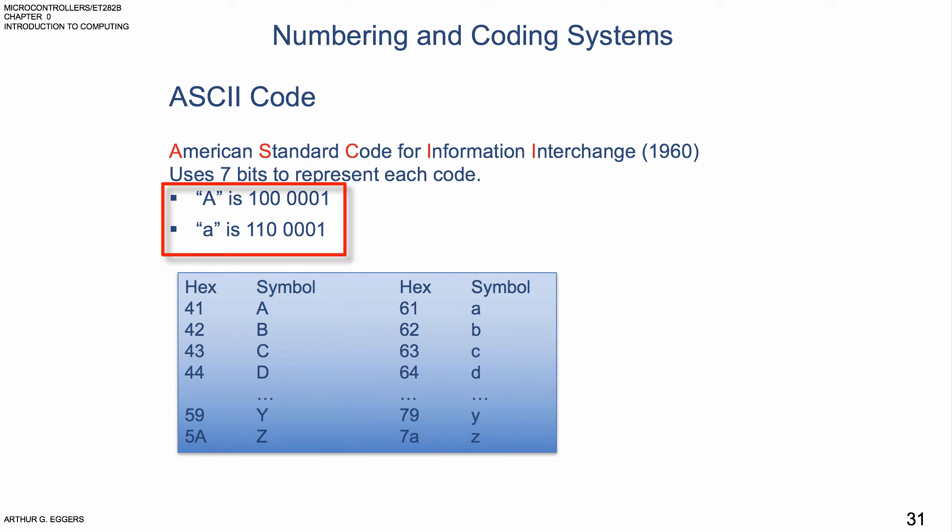In this case, an example, A is 1000001. Again, the lowercase a is different, 1100001. And you can see that from the table, we have several representations of values in hex, its symbol, i.e. on the keyboard, and what its value is.